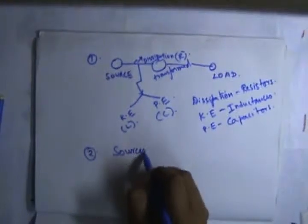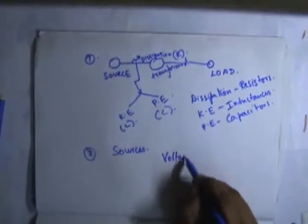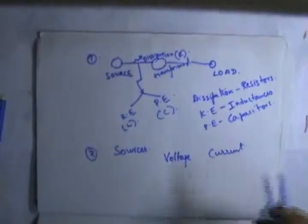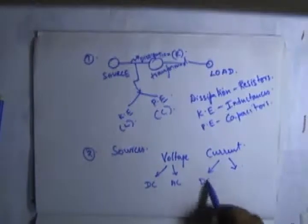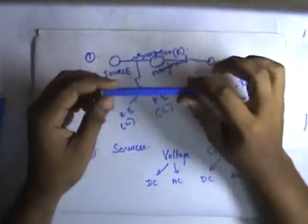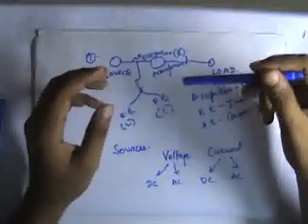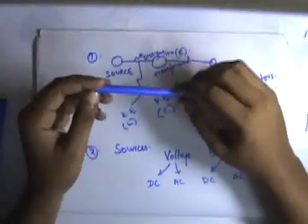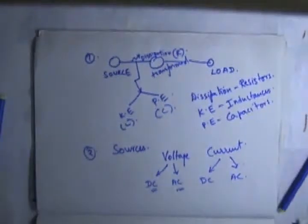The second lecture is going to be about sources. The sources we are going to discuss are voltage sources and current sources, in detail covering DC and AC. The sources may be a voltage source or a current source — a DC voltage source or an AC voltage source, and similarly a DC current source or an AC current source. The second lecture will consider all sources in DC and AC transmission.